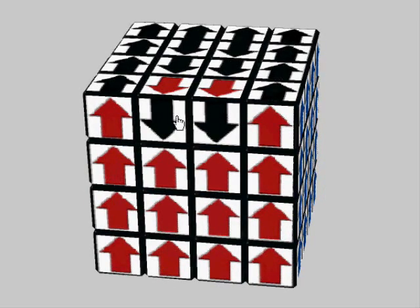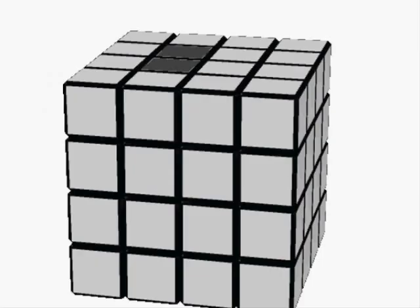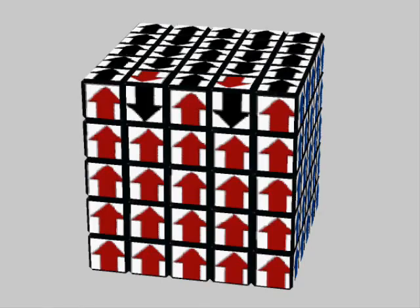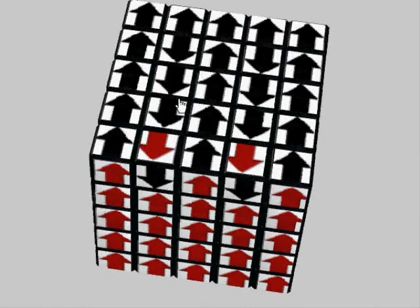These two individual edge cubies are swapped with each other, and these two 1x2 center blocks are swapped with each other. This center block is swapped with that one. If we look at this on a 5x5 supercube, again, these two individual edge cubies are swapped, and these two 1x3 blocks are swapped with each other.